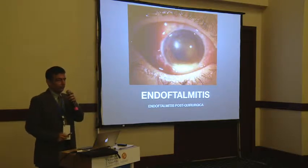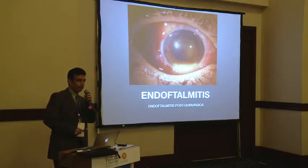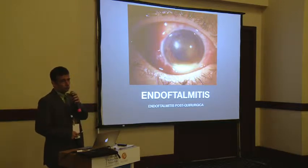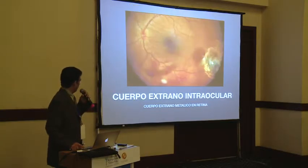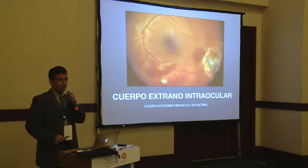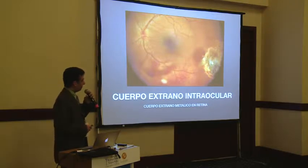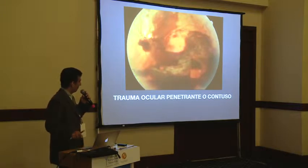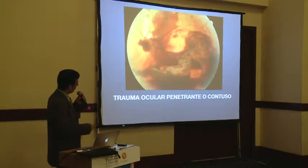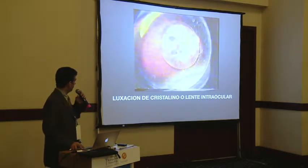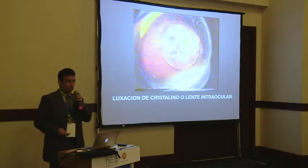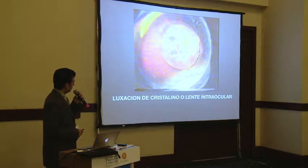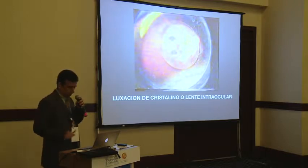Endoftalmitis es la infección intraocular posquirúrgica — la más frecuente es tras cirugía de cataratas — y puede ser también una infección intraocular en pacientes inmunodeprimidos, por citomegalovirus o por hongos. Cuerpo extraño intraocular siempre es trauma: pacientes que están trabajando sin la protección adecuada, y la mayoría son metálicos, aunque también pueden ser vegetales. Trauma ocular penetrante o contuso: la mayoría de las veces detrás de toda esa sangre hay rupturas coroideas o rupturas retinianas. Luxación de cristalino o lente intraocular, que puede ser traumática o, más frecuentemente ahora con la facoemulsificación, es la luxación del cristalino hacia el fondo del ojo — se ha desprendido de su sitio normal y se ha ido hacia atrás.